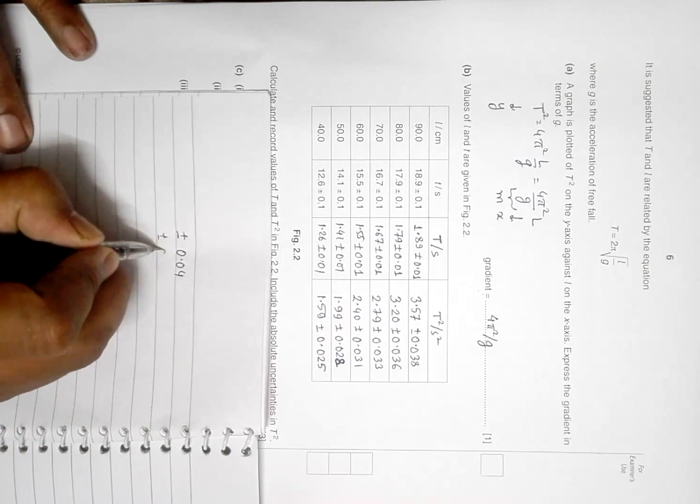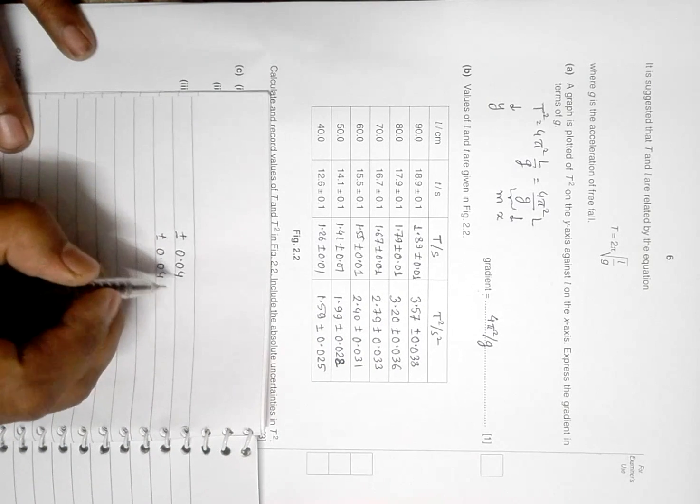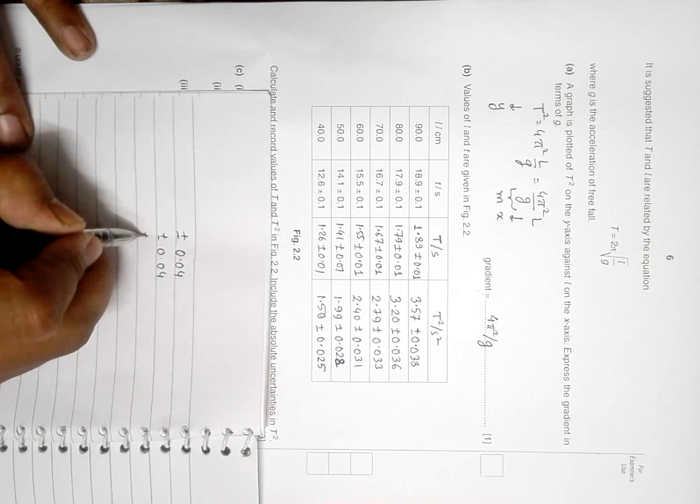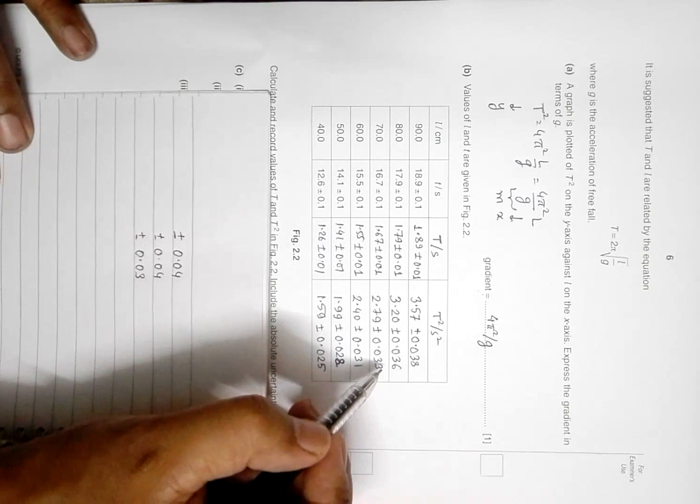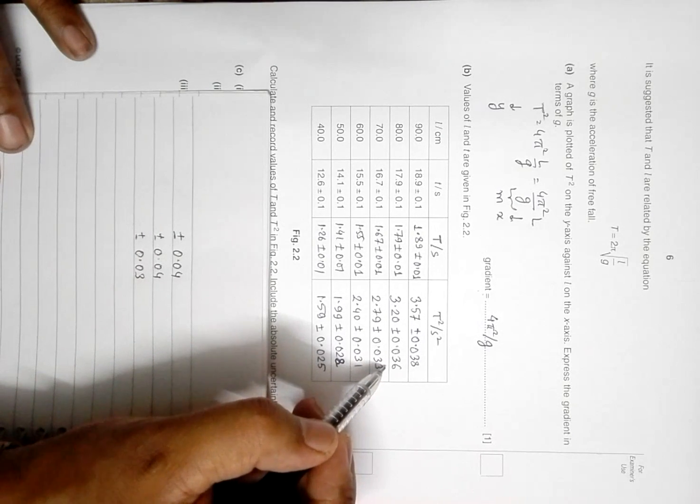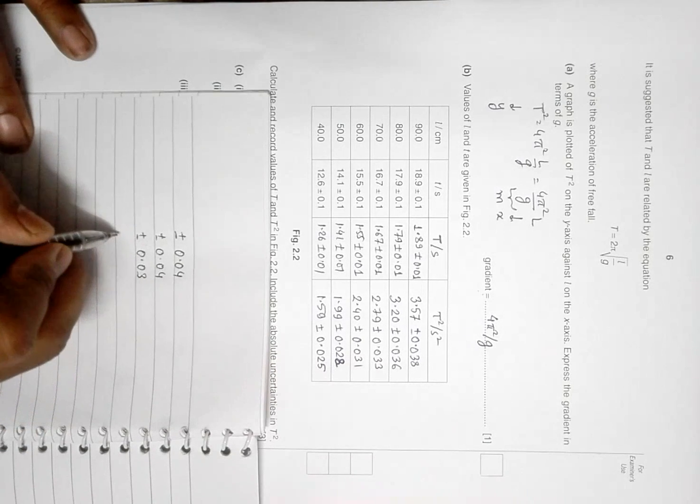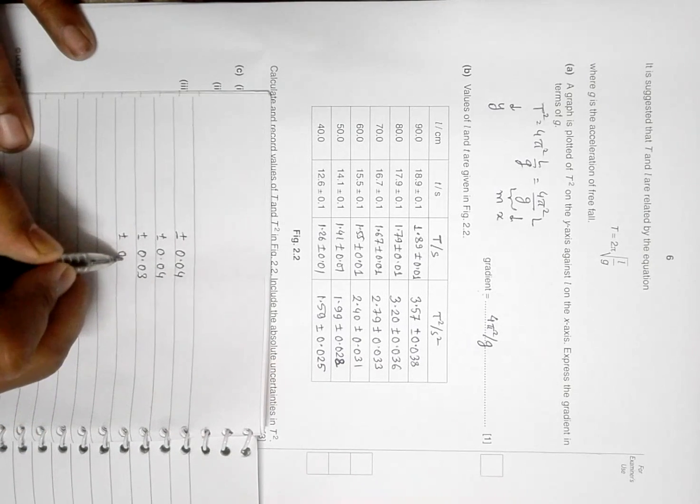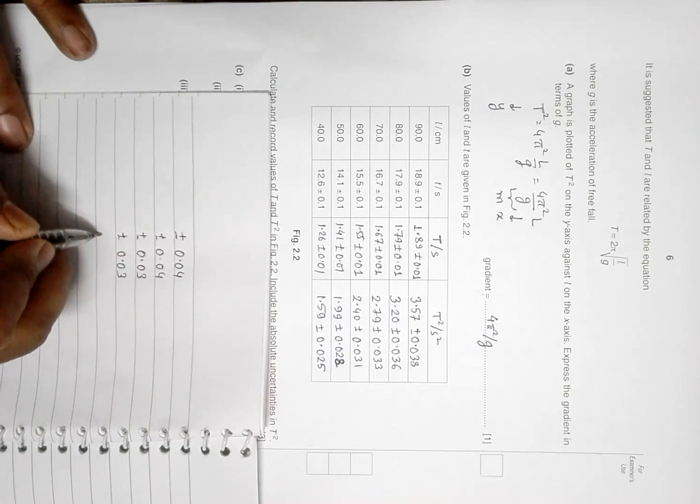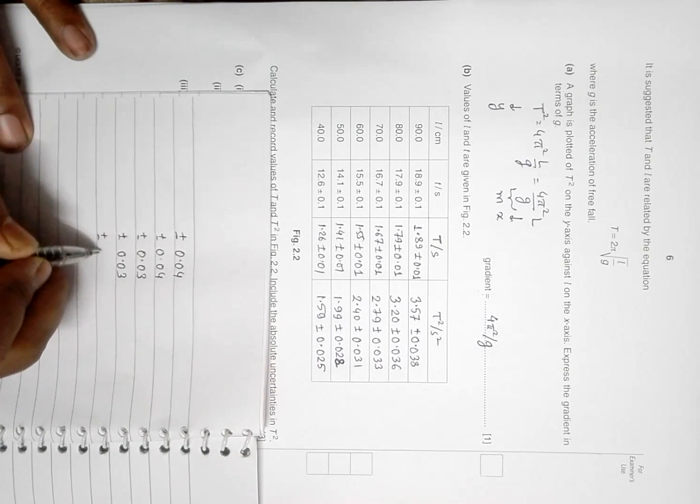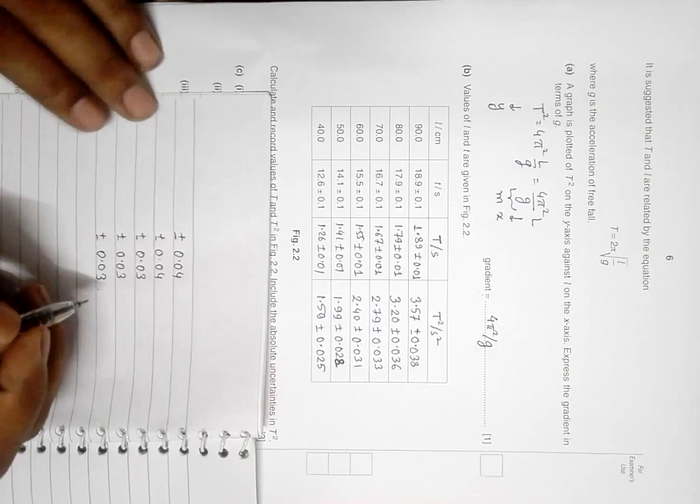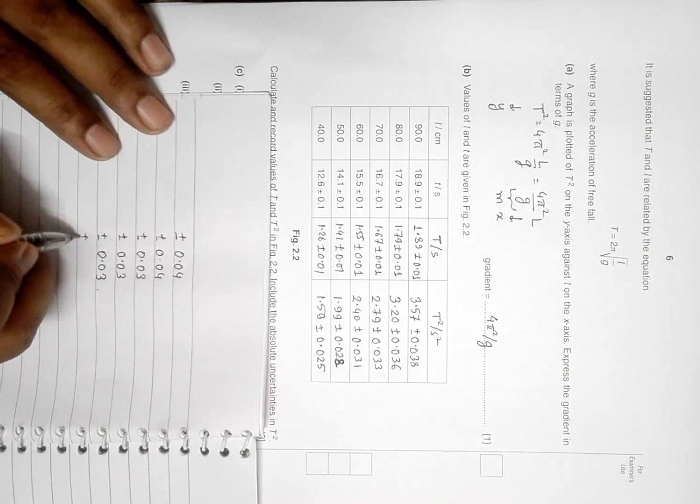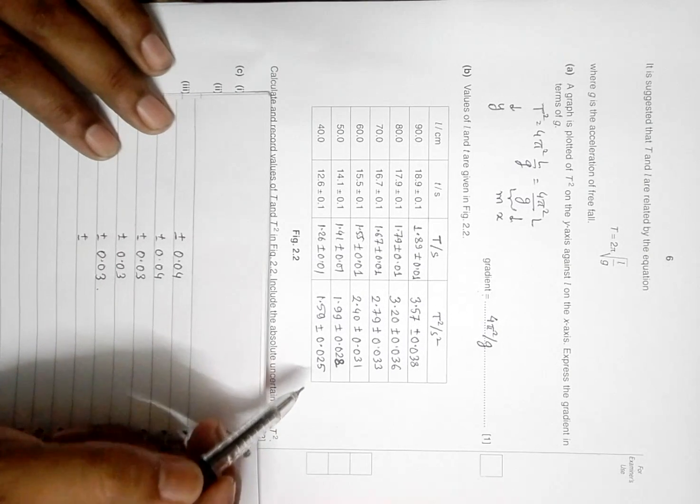In the second, you'll have 0.04 once again. In the third, you will have 0.03 because 3 is less than 5, so it stays at 3. The fourth will be 0.03 once again. The fifth one will be 0.03. Now, in the sixth one we have 0.025.